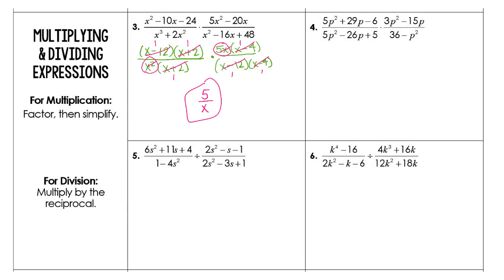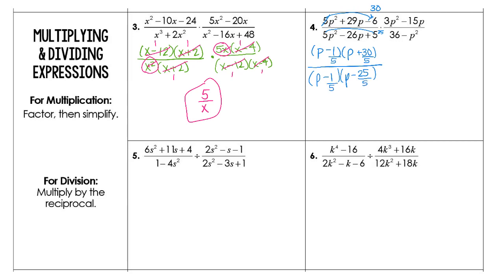Our next problem looks like we're going to have some slide and divide. We need to multiply this 5 over, giving us 30. In our factoring process, it looks like we're going to have P and P, and for 30, we need a positive 30 and a negative 1. Remember it's slide and divide, so we have to come back and divide. In the denominator, slide and divide again looking at factors of 25 — negative 25 and negative 1 — then divide by 5.